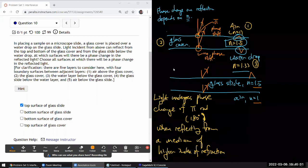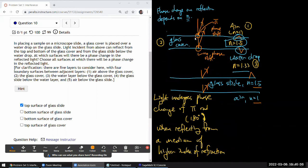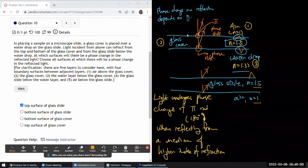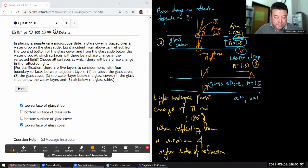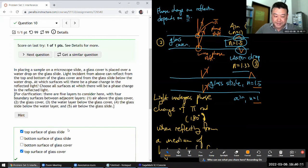Bottom surface of glass cover. You're going from 1.5 to 1.3. So no phase shift again. Top surface of glass cover. You're going from n equals 1 to 1.5. So yes. Okay. That's it. That's all the layers. I haven't forgotten anything. We'll see. Good.